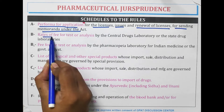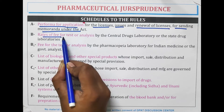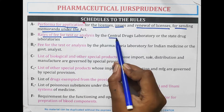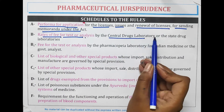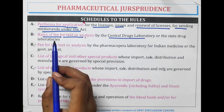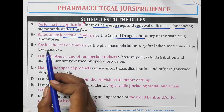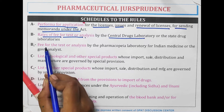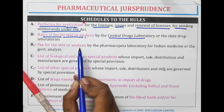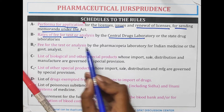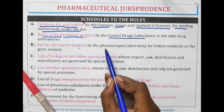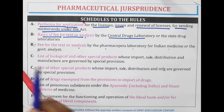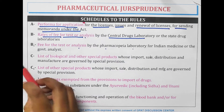Schedule B covers the rate of fees for the test or analysis by the central drug laboratory or the state drug laboratories. Schedule B1 is the fees for the test or analysis by the pharmacopoeia laboratory for Indian medicine or the government analyst.